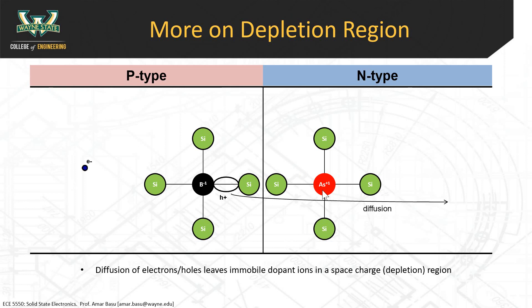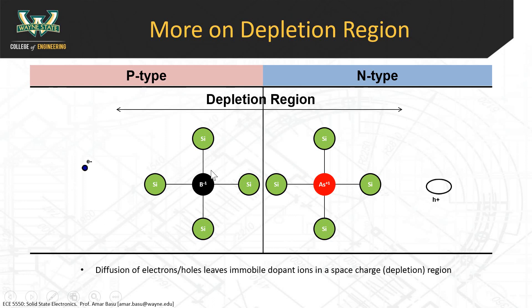Imagine the hole doing the same thing — diffusing over to the right side. Because of this diffusion effect, you're leaving behind these immobile charges. You're depleting the carriers in this region. Electrons diffuse over, holes diffuse to the other side, but they leave behind those charged ions. This zone has two names: the depletion region, because it is depleted of mobile carriers — depleted of electrons and holes — and the space charge region, because there are immobile charges in the middle.